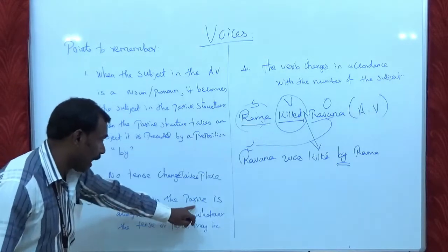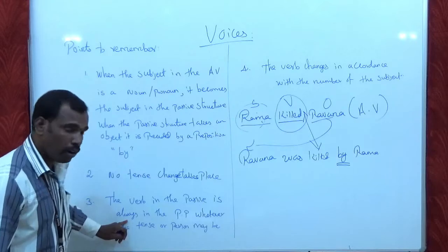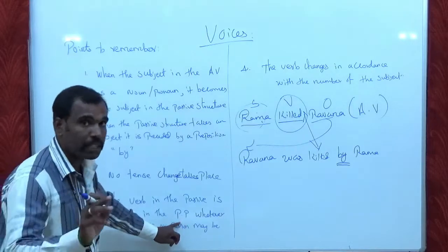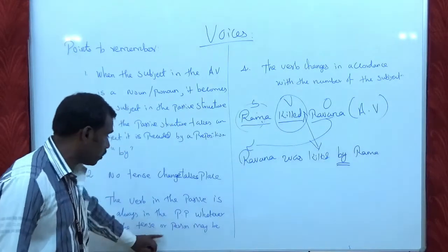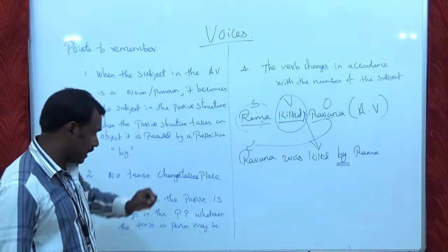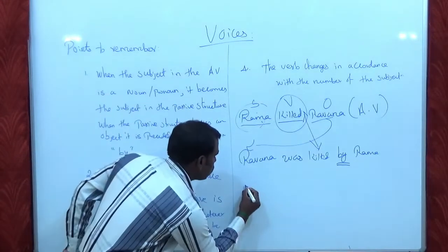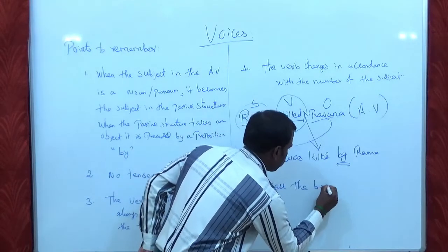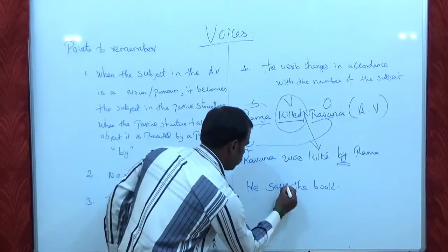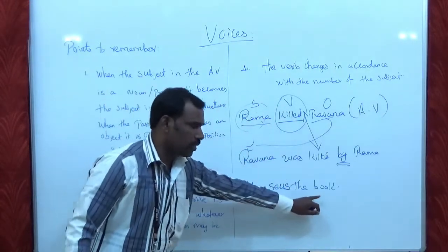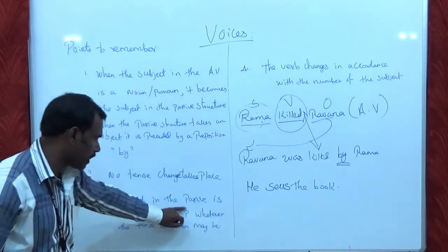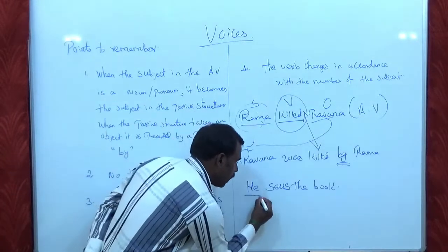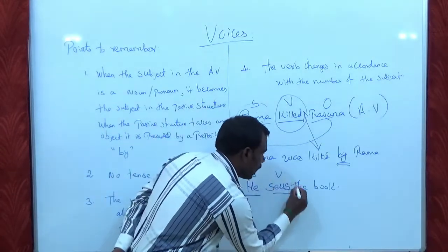Point number three: the verb in the passive is always in the PP — that is, past participle, which is the third form of the verb — whatever the tense or person may be. For example: He sells the book. Here, He is the subject, sells is the verb, and the book is the object. This is active voice.